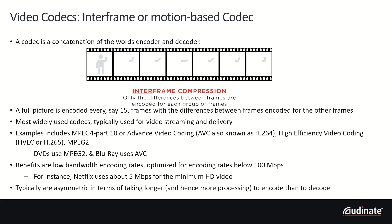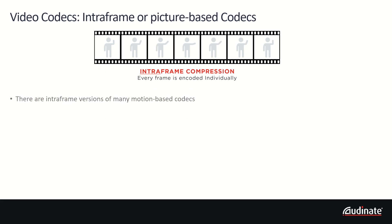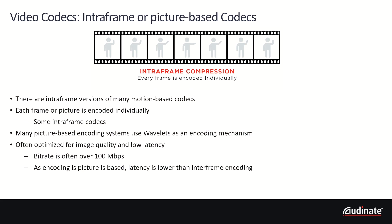Intraframe, or picture-based codecs, encode each frame individually. As such, they support lower latency use cases than motion-based codecs. Typically, bitrates for picture-based codecs are higher than 100 megabits, enabling higher quality.